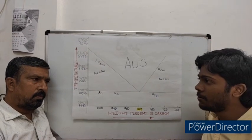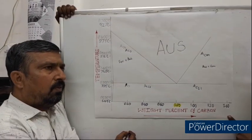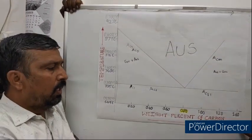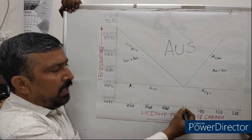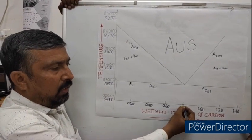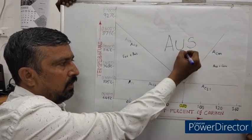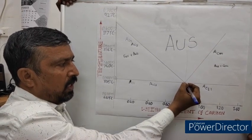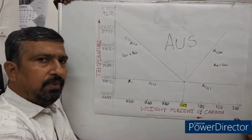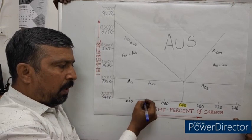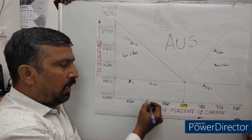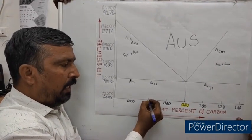Example, please, sir. For example, if you consider 0.8% carbon steel on heating, there is only one critical temperature.